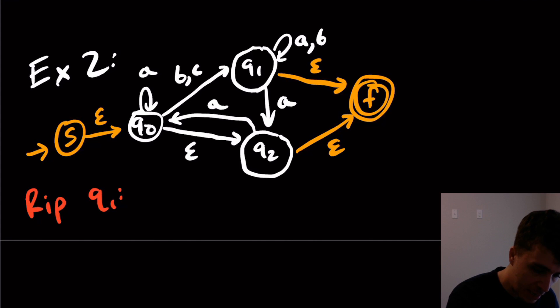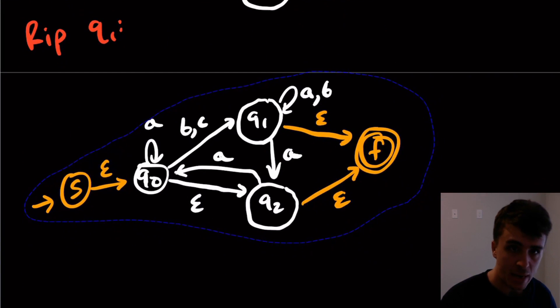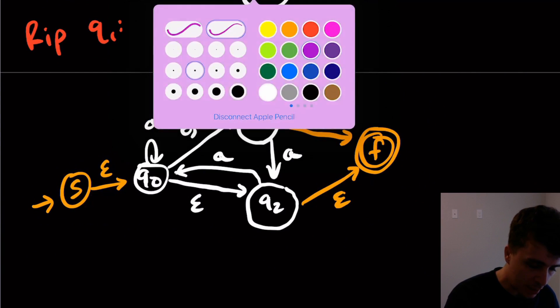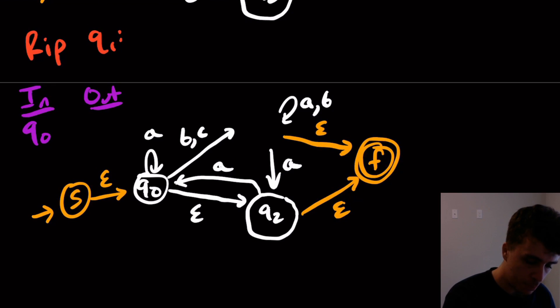So again, I'm going to copy this whole machine down. So paste. So then now we got to make our in and out list. So remember, the in list is the states that go into Q1. The states that go into Q1, out is the list of states that Q1 actually goes to. So the in list is only going to be Q0, because that's the only state that goes into it. The out list is going to involve Q2 and F.